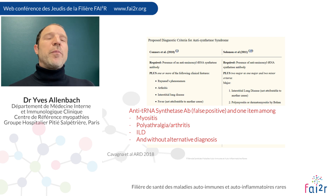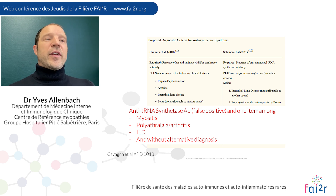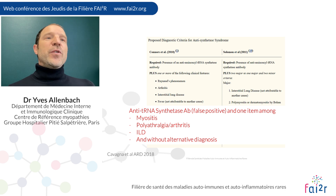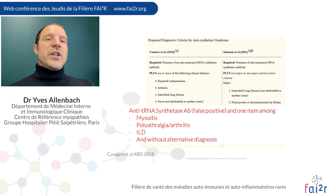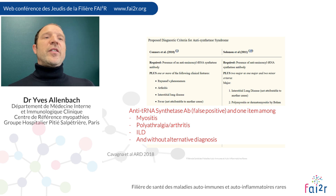While awaiting final conclusions, we can say that you need at minimum a positive antisynthetase antibody plus clinical signs of antisynthetase syndrome in at least one of the following domains: myositis, polyarthralgia or specifically synovitis, or ILD. You should exclude other conditions explaining these signs and be aware that antisynthetase antibody tests can sometimes show false positivity. You must correlate antibody positivity with the clinical features. False positivity is very frequent with OJ, as routine kits are not always specific enough.